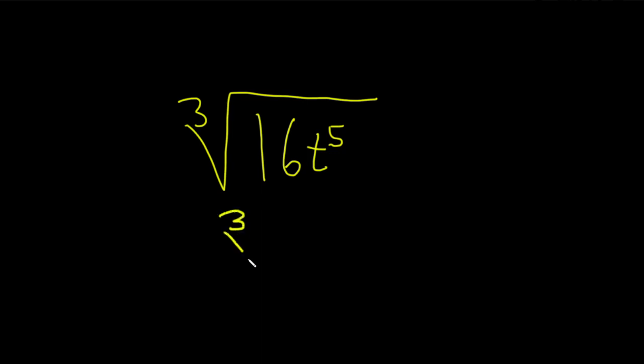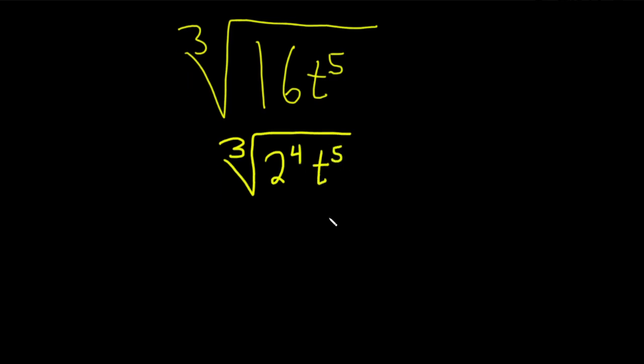This is the cube root of 2 to the 4th, t to the 5th. And now let's think about 3rd powers. Now that everything's written to a power, we can get a 2 cubed from the 2 to the 4th.